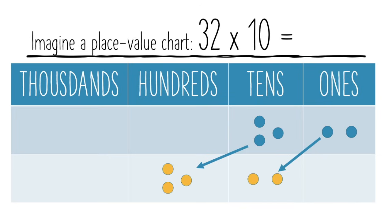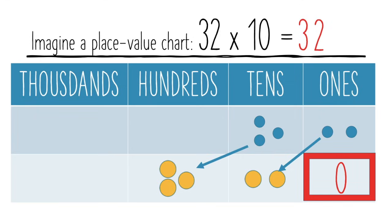Now when we go to write our answer from what we've been representing on the chart, we have three hundreds, two tens, which is 20, and we have nothing left in the ones column, so we have to add a zero at the end. 32 times 10 equals 320.